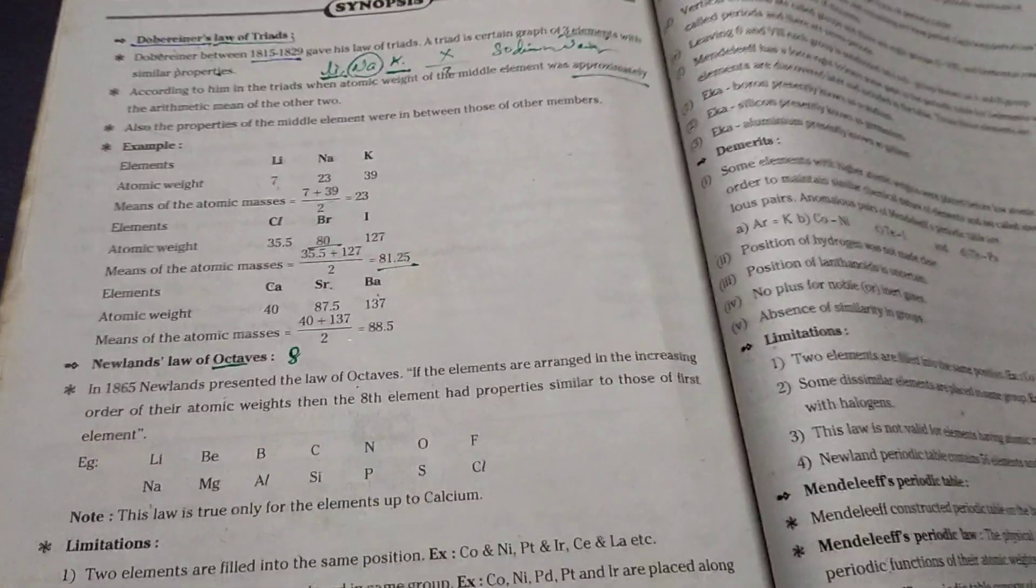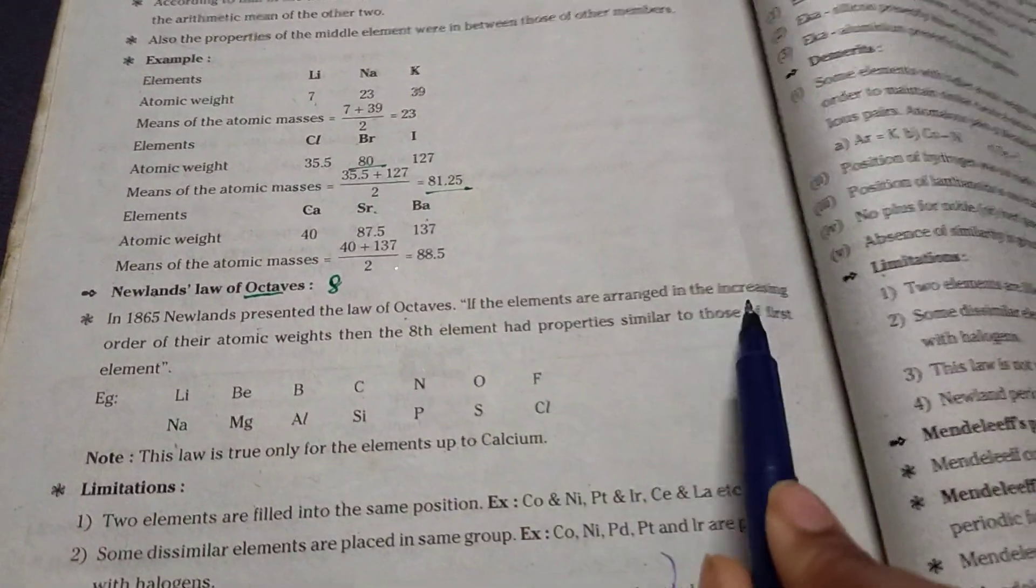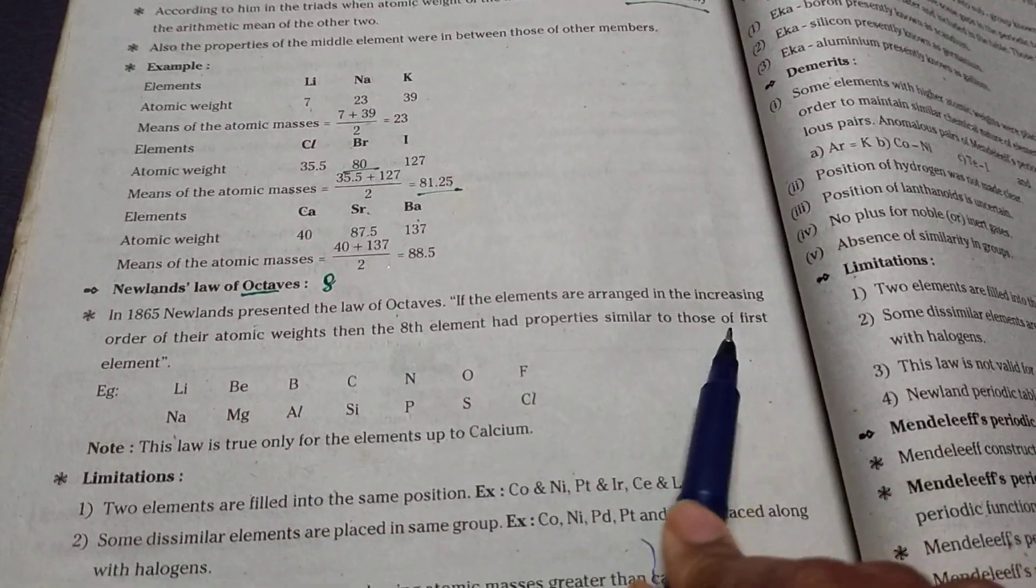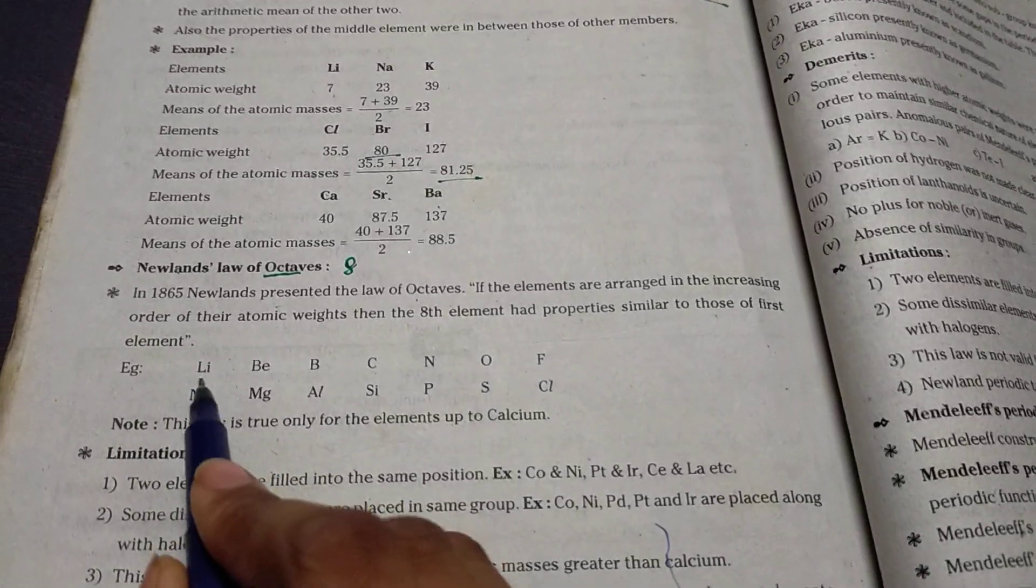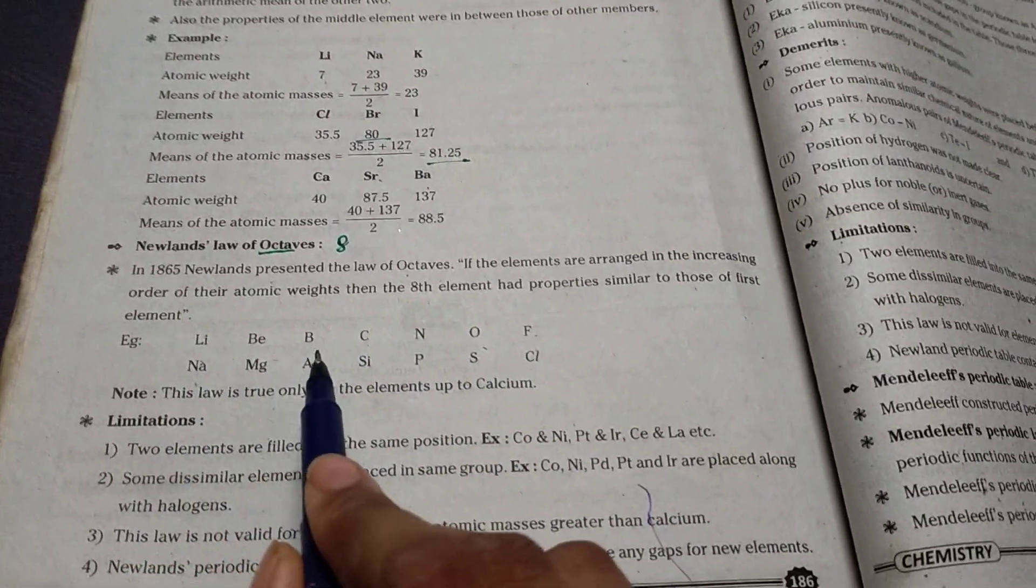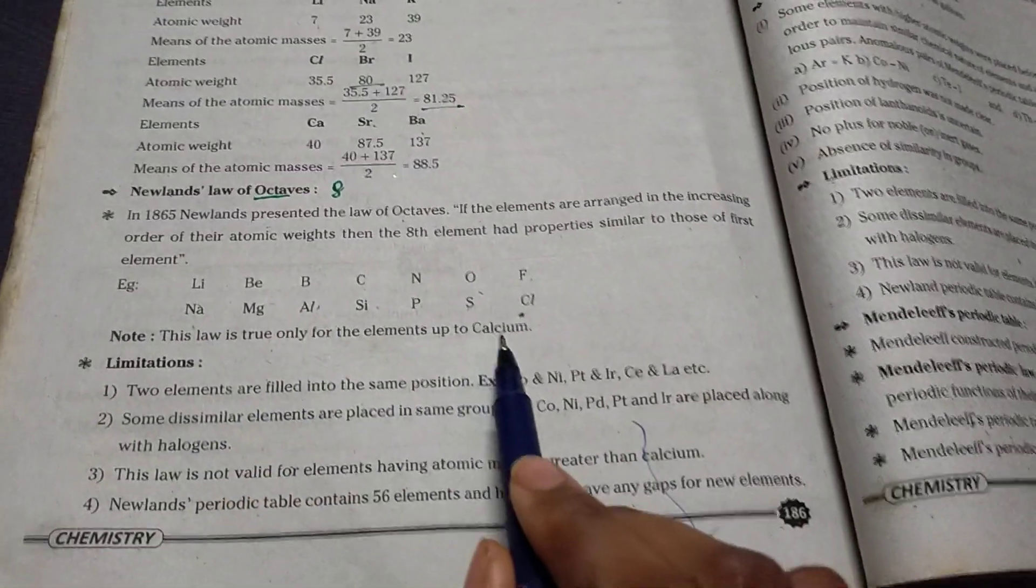He named his law Newlands' law of octaves. If the elements are arranged in the increasing order of their atomic weights, the eighth element's properties are similar to those of the first element: lithium, beryllium, boron, carbon, nitrogen, oxygen, fluorine, sodium, magnesium, aluminum, silicon, phosphorus, sulfur, chlorine. This law is true only for the elements up to calcium.